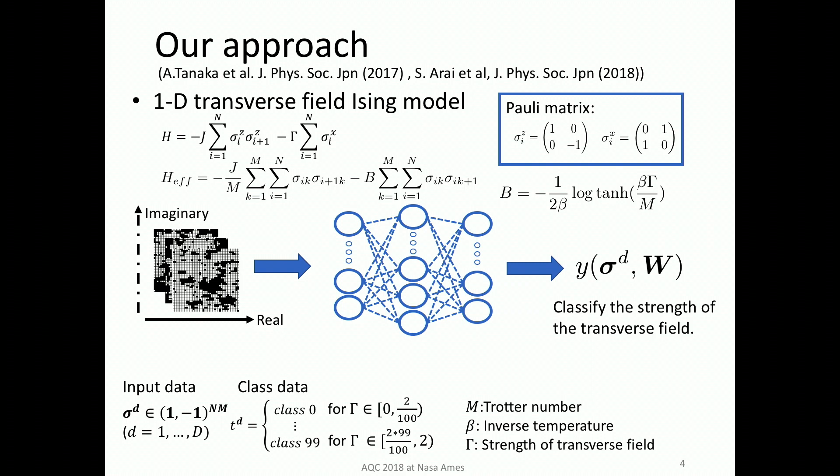We regard this as a multi-classification problem, and we discretize the strength of the transverse field. Through the learning process, the neural network learns the features of the strength of the transverse field from spin configurations. After learning, the extracted features about the strength of the transverse field are reflected in the weight parameter of the neural network.